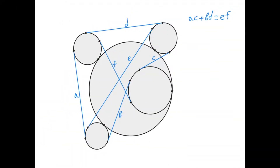For example, here's how Casey's theorem looks when only one circle is internally tangent and the other three are externally tangent. We take this outer tangent line, this inner tangent line because these two circles lie on different sides, then this inner tangent line, the outer line here, the outer line here, and the inner line here. The same statement holds: AC plus BD equals EF.